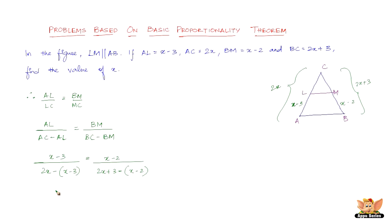Solving this we get x minus 3 over 2x minus x minus of minus 3 is plus 3, which equals x minus 2 over 2x plus 3 minus x minus of minus 2 is plus 2. So x minus 3 over x plus 3 equals x minus 2 over x plus 5.